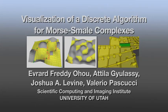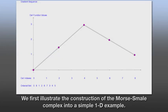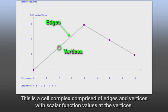Visualization of a Discrete Algorithm for Morse-Smale Complexes. We first illustrate the construction of the Morse-Smale Complex into a simple 1D example. This is a cell complex comprised of edges and vertices with scalar function values at the vertices.